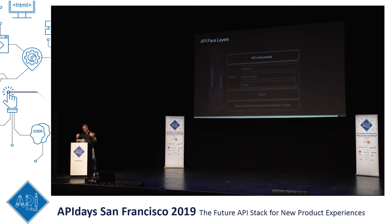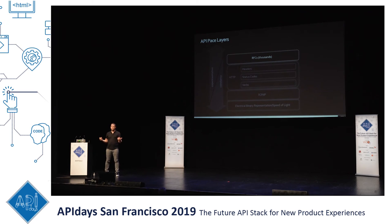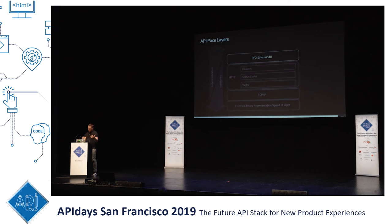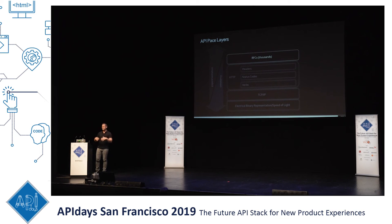There's also RFC 8594, the sunset header. These APIs don't live forever — they get versioned, they get shut down, and it's important to provide a formalized, standard way of communicating this. The sunset header is exciting because it started on Twitter with a few folks saying they had this problem, others chiming in saying they had it too, and that grew into something that ultimately now has this RFC assigned to it.